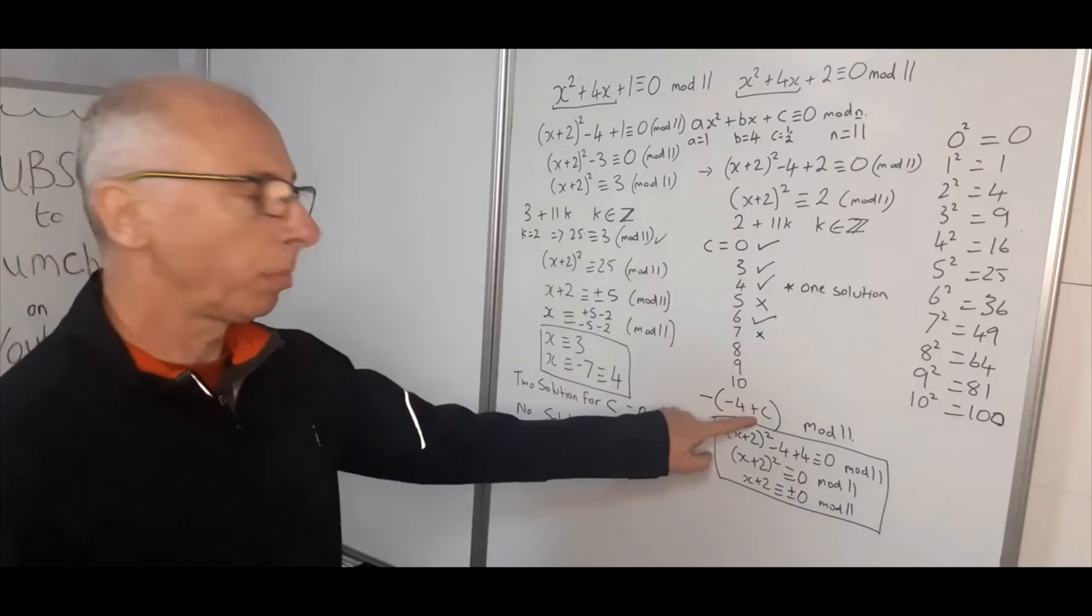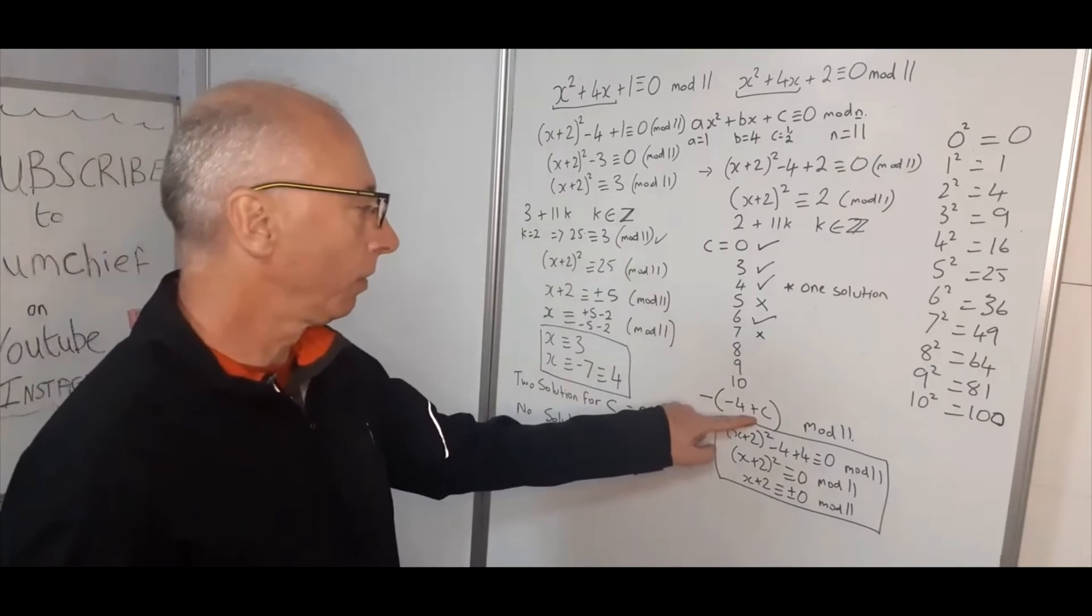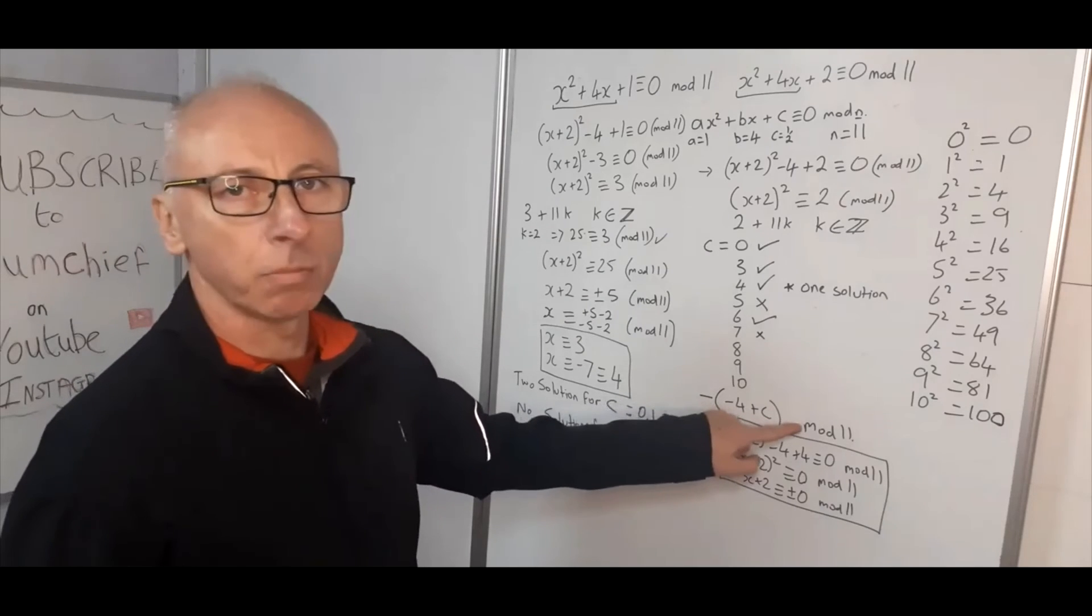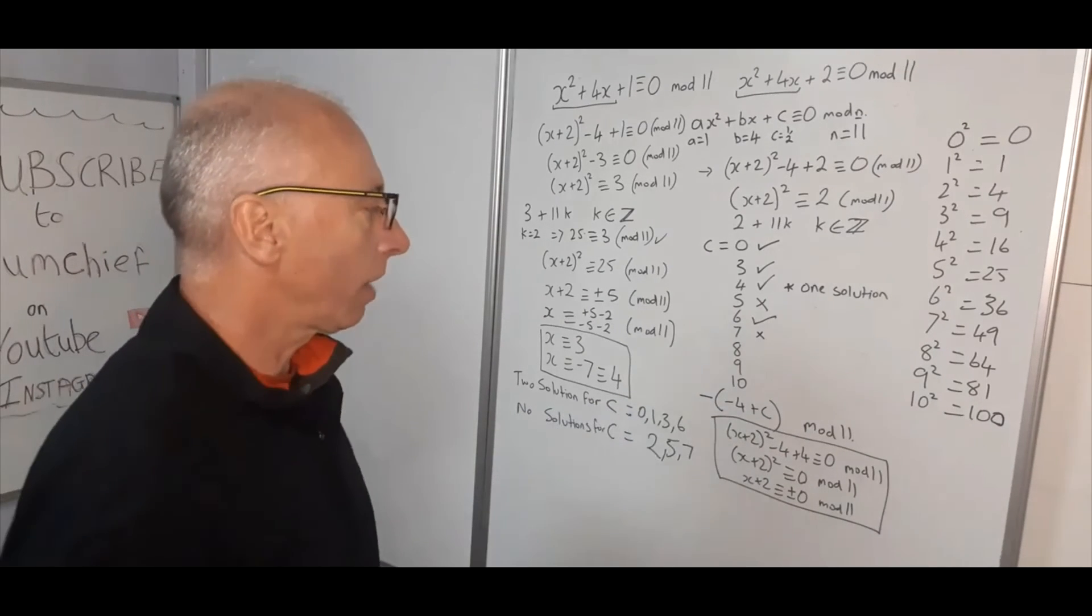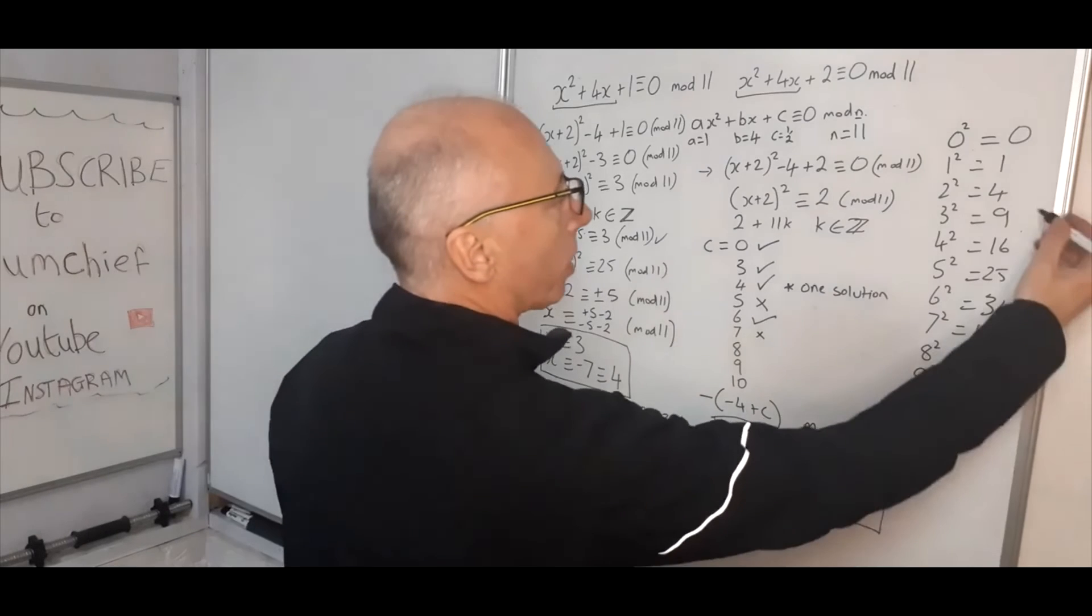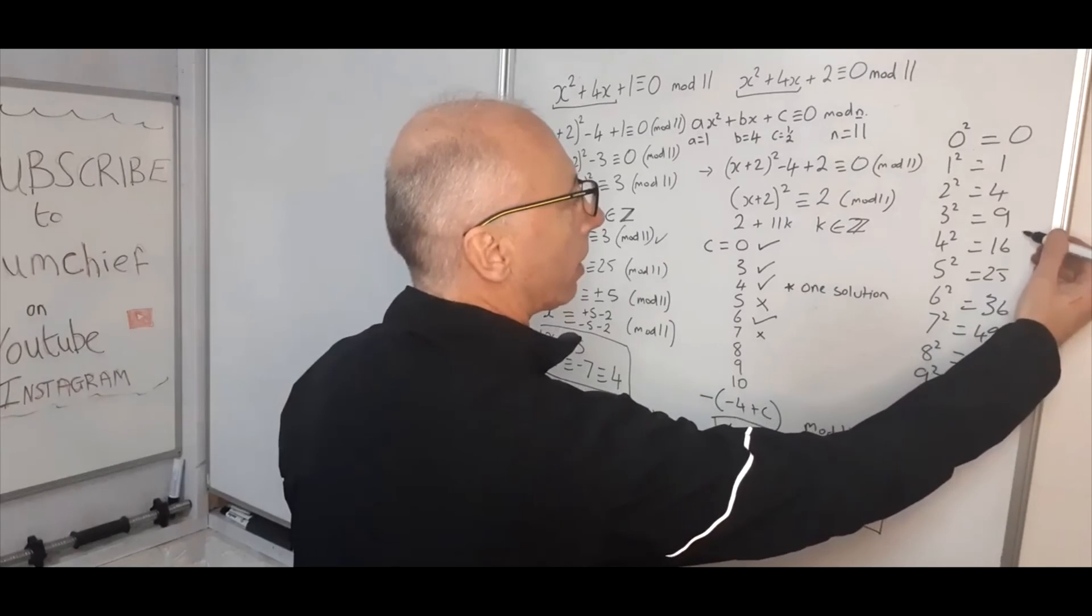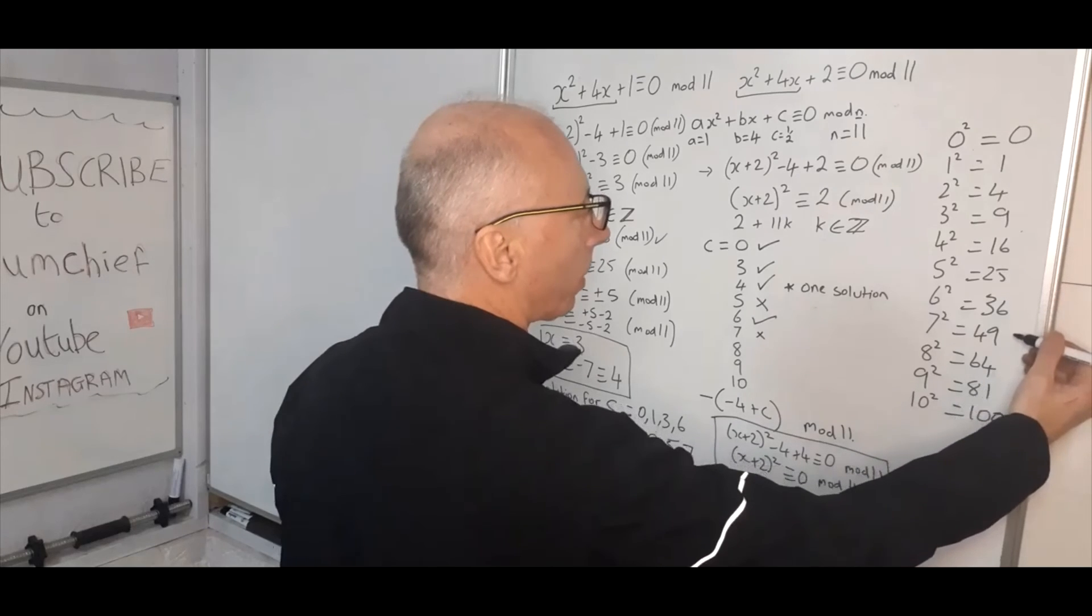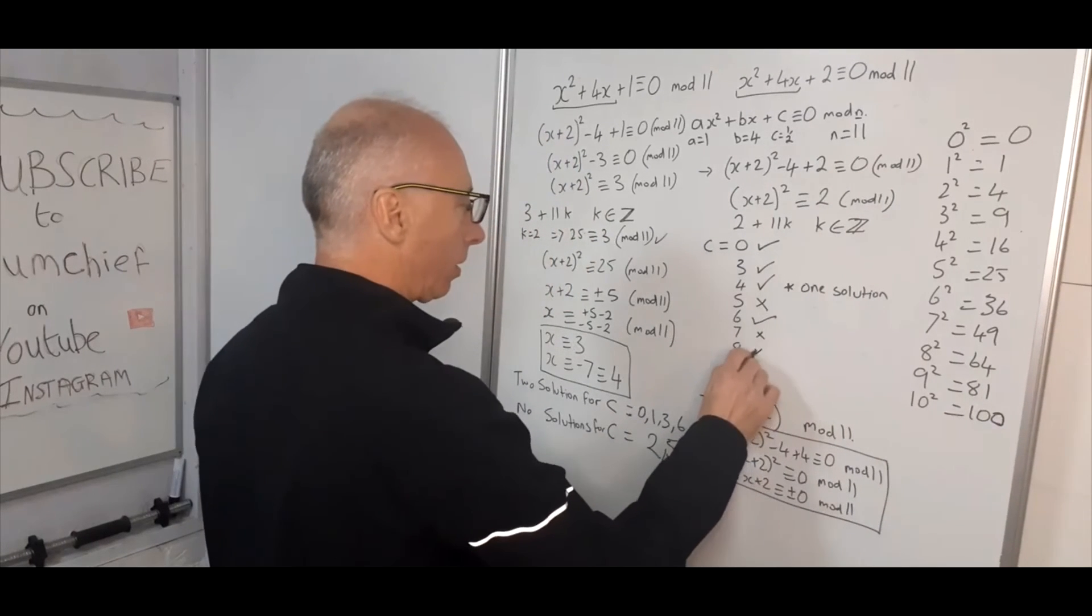8 minus 4 plus 8 is positive 4, which then becomes minus 4. Minus 4 mod 11 will give us 7. So I'll go through this table again. 7, 18, 29, 40, 51, 62, 73. I'm going to say 8. No solutions.